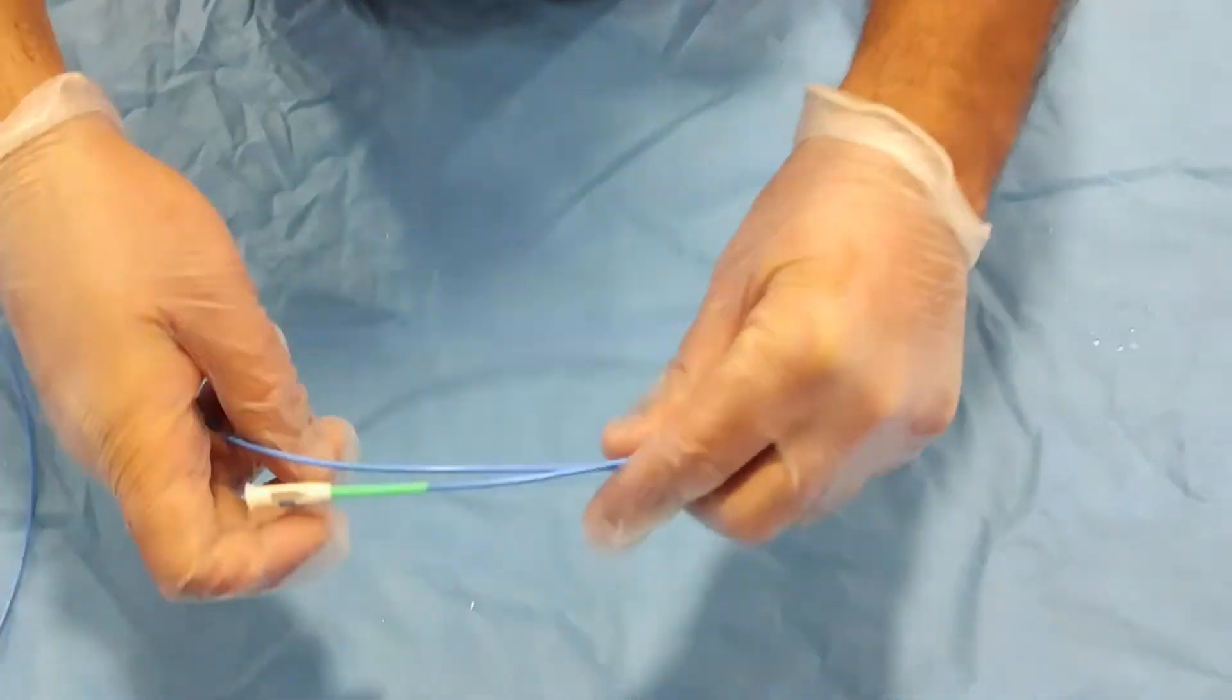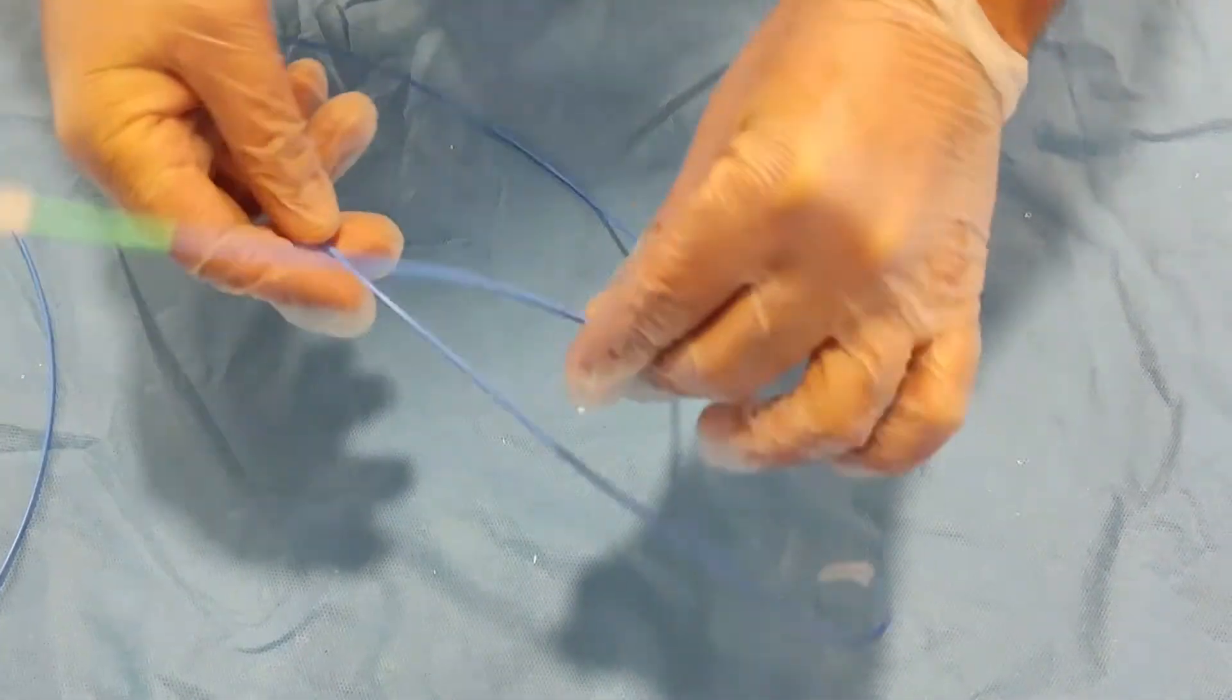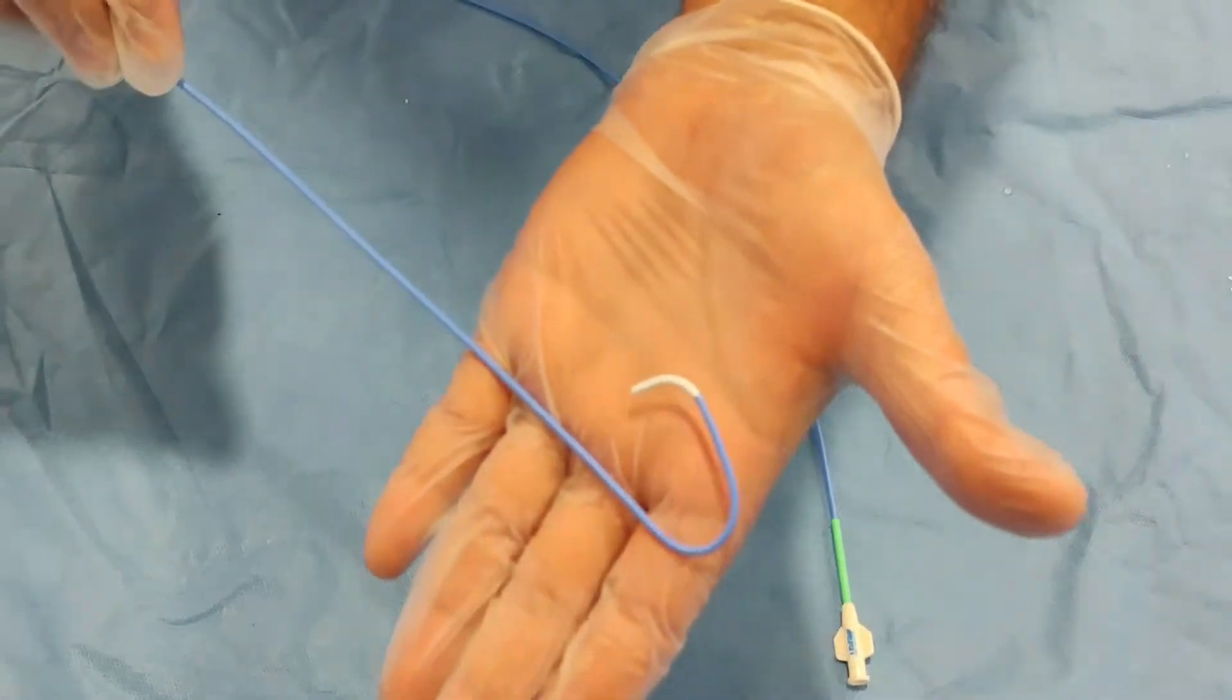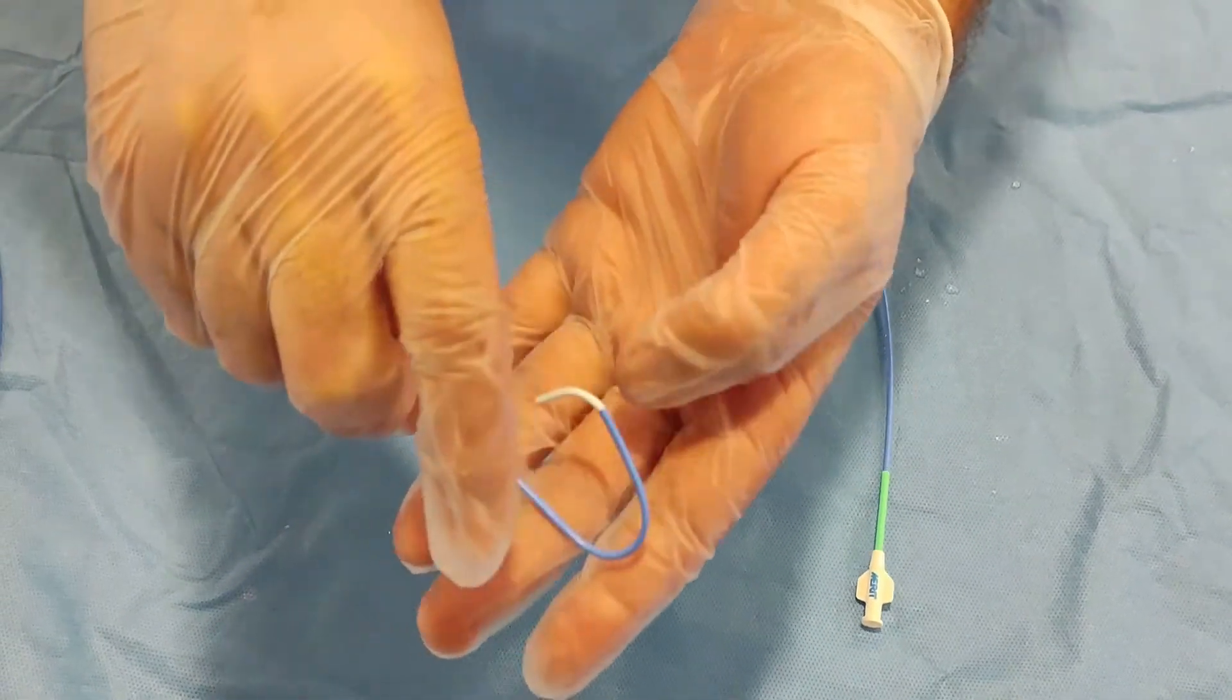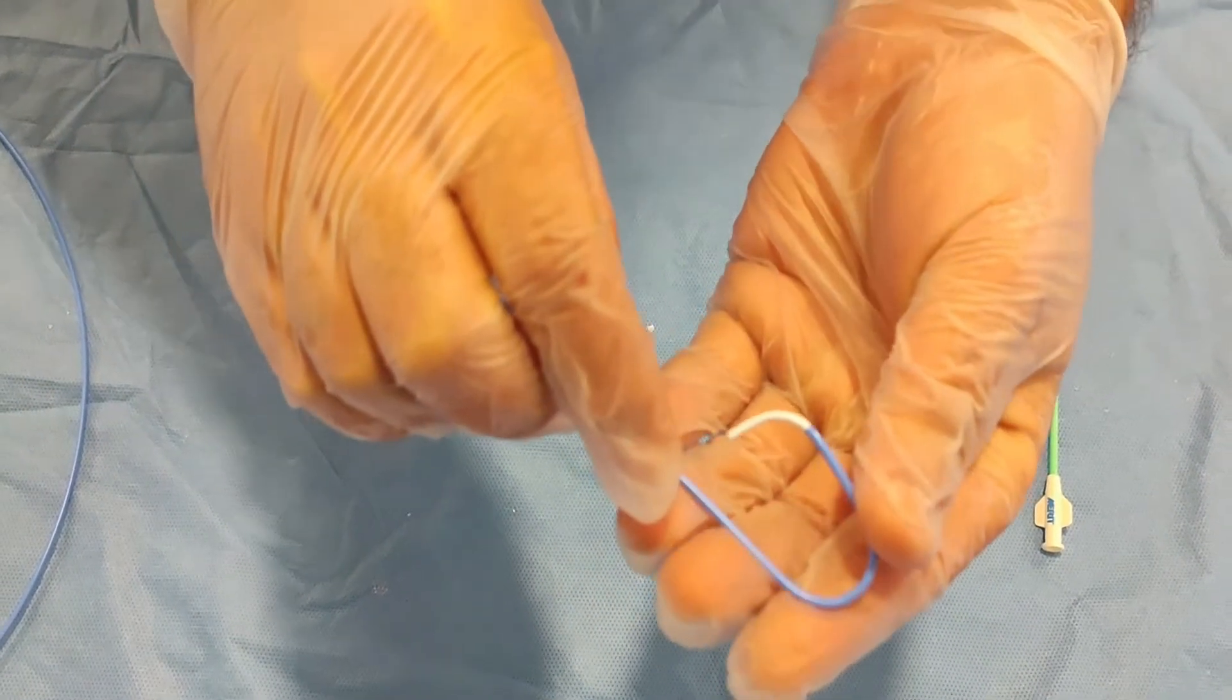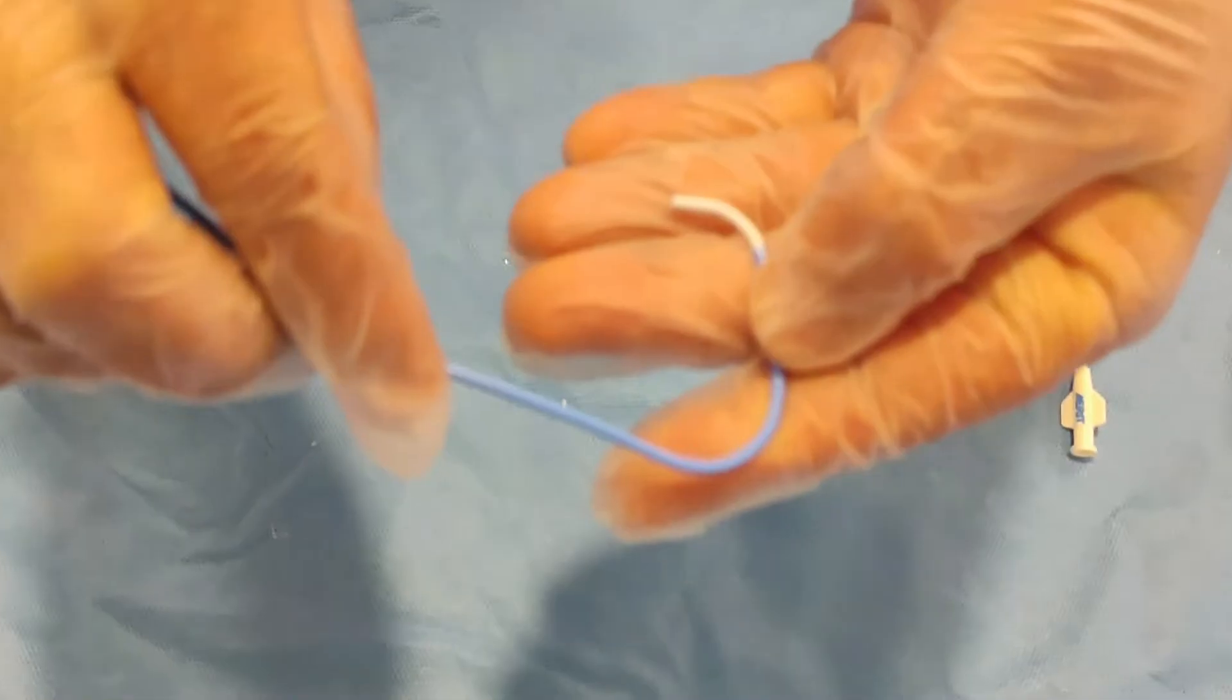Whereas this catheter is called JL, the Judkins left catheter. This is JL3.5. It's all about the primary and secondary curve. In the JL3 it's a small curve, JL3.5, JL4 a big curve. This all depends upon the size of the catheter.